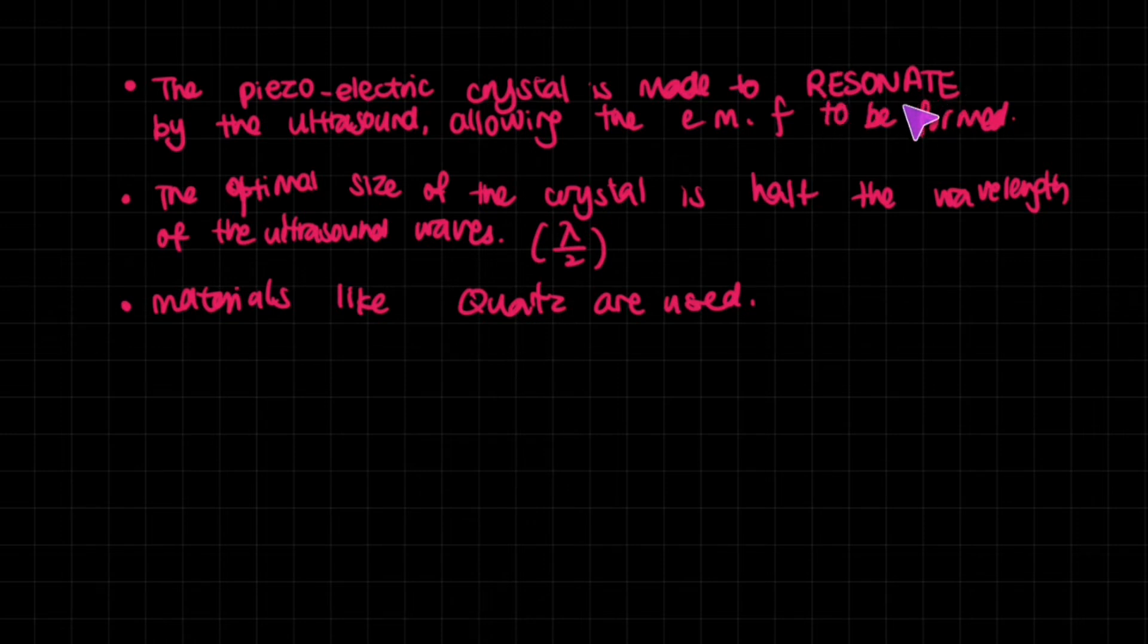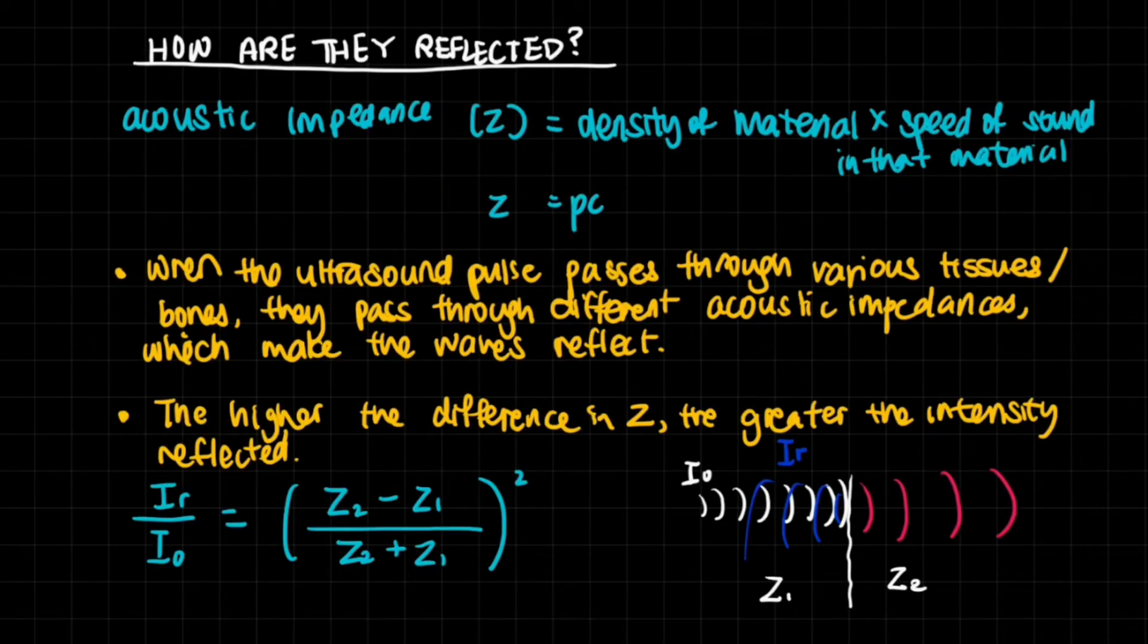The optimal size of the crystal is half the wavelength of the ultrasound waves - lambda over two. For the transducer or piezoelectric crystal, materials like quartz are used.